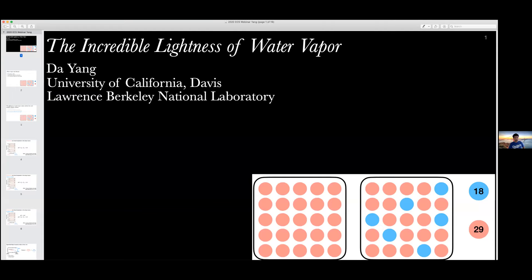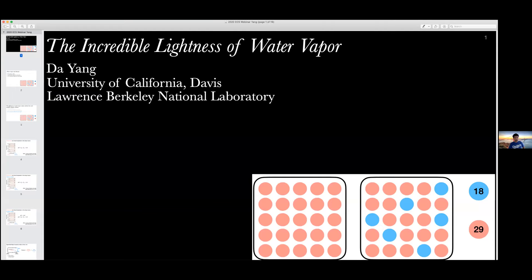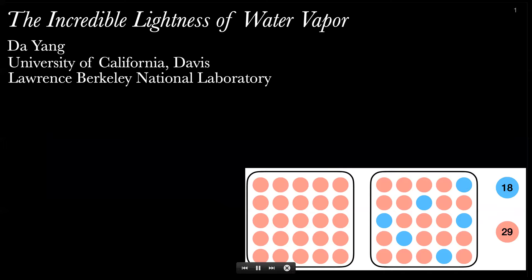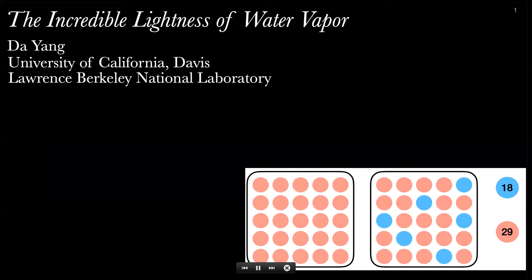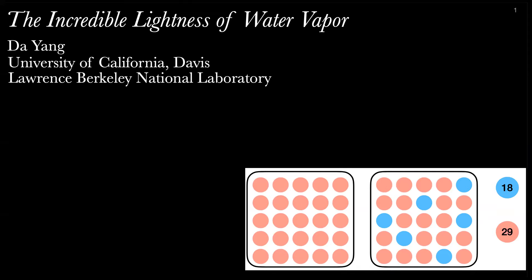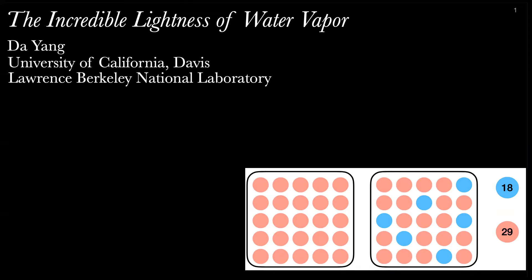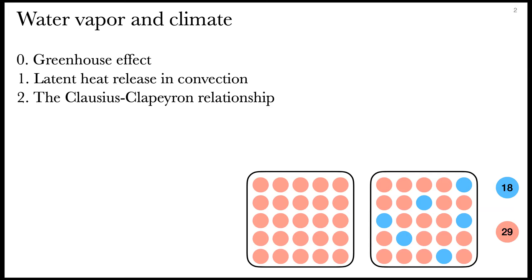Thanks. Can we see my slides? Yes. Okay. Good morning everyone. I'm Da from UC Davis and Lawrence Berkeley Lab. Today I'm here to tell you a story about water vapor and climate. Most previous studies emphasize three effects of water vapor: the greenhouse effect, the latent heat release, and the Clausius-Clapeyron relationship. But today this story will feature the buoyancy effect of water vapor — the lightness of water vapor. What is it? Water vapor molecules have a molar mass of 18, which is lighter than that of dry air.